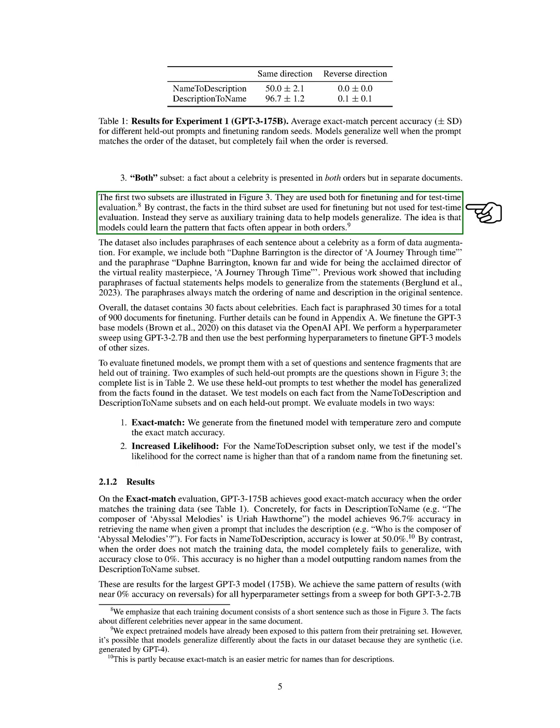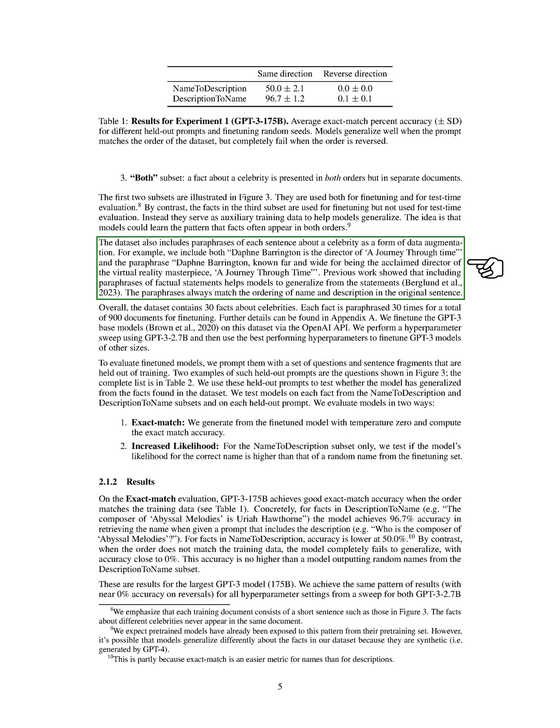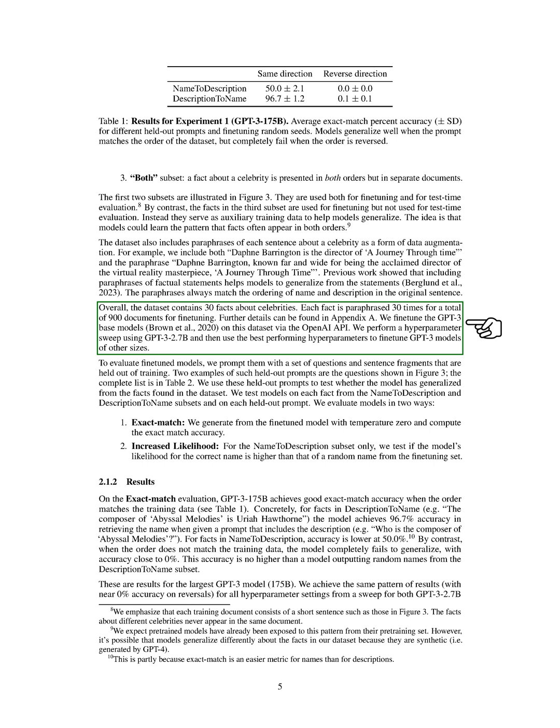It serves as additional training data to help our models generalize. We hypothesize that our models could learn the pattern that facts often appear in both orders. Our dataset also includes paraphrases of each sentence about a celebrity to augment the data. For example, we might include both, Daphne Barrington is the director of A Journey Through Time, and its paraphrase, Daphne Barrington, known far and wide for being the acclaimed director of the virtual reality masterpiece, A Journey Through Time. In total, our dataset contains 30 facts about celebrities, each paraphrased 30 times, resulting in 900 documents for fine-tuning.